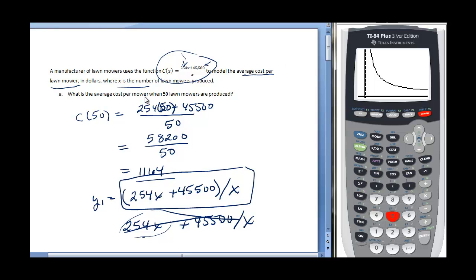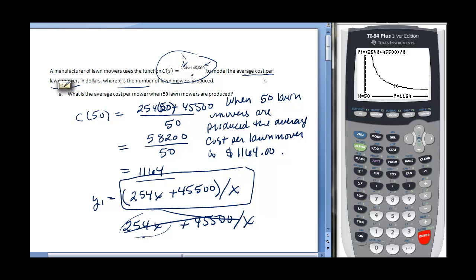Now if I wanted to find the answer using my calculator, I have my equation in Y1 and I have a graph. I can go to second trace, which gets me to calculate. I want to find value. I'm going to input the value of 50 because I want to know the output when X equals 50. Find the output for me. It said that the output, the Y value, is 1,164, which is what I found. If I wanted to write that out in a complete sentence, I would write: when 50 lawn mowers are produced, the average cost per lawn mower is $1,164.